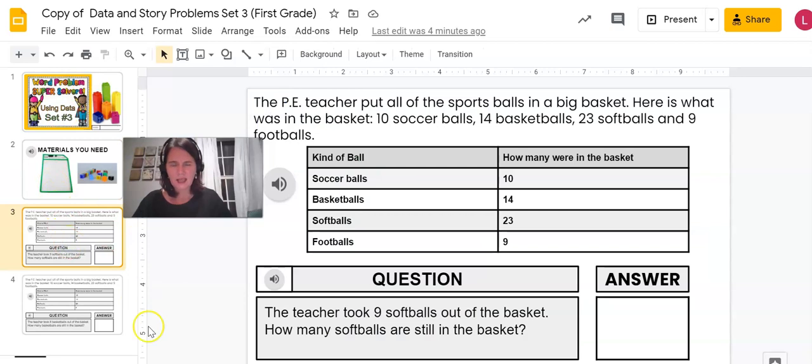Oh goodness, boys and girls, there's so much writing, isn't there? But you can click here and listen to it and it will read it out loud. So the PE teacher put all of the sports balls in a big basket. Here's what was in the basket: 10 soccer balls. And do you see how our chart tells us soccer balls 10, 14 basketballs.